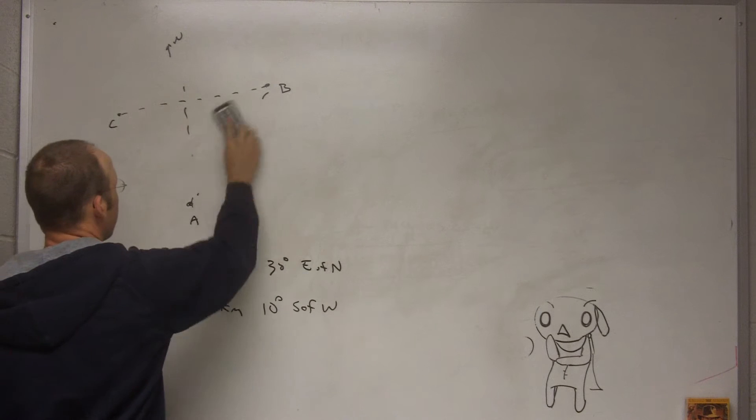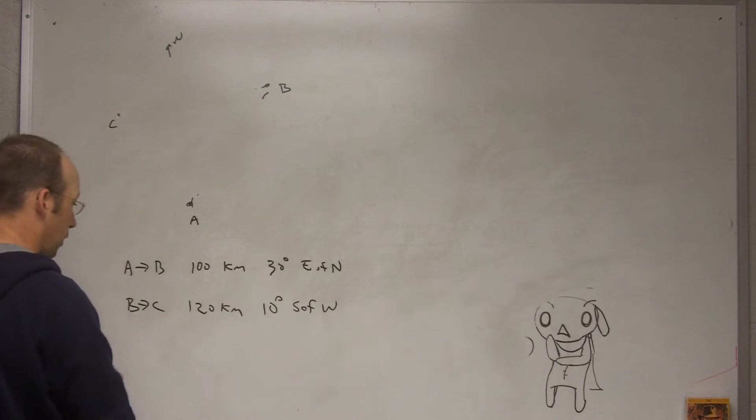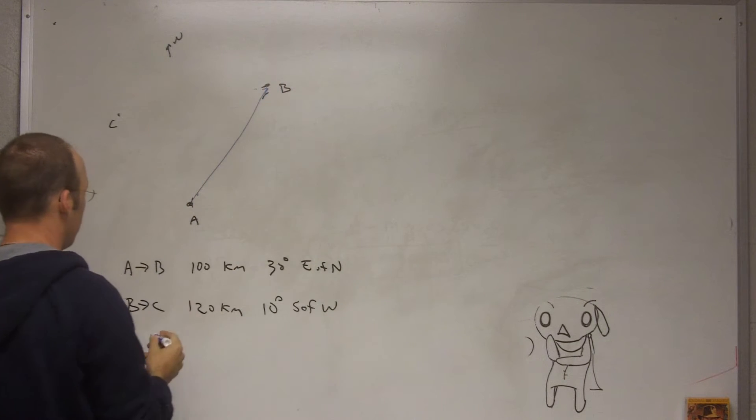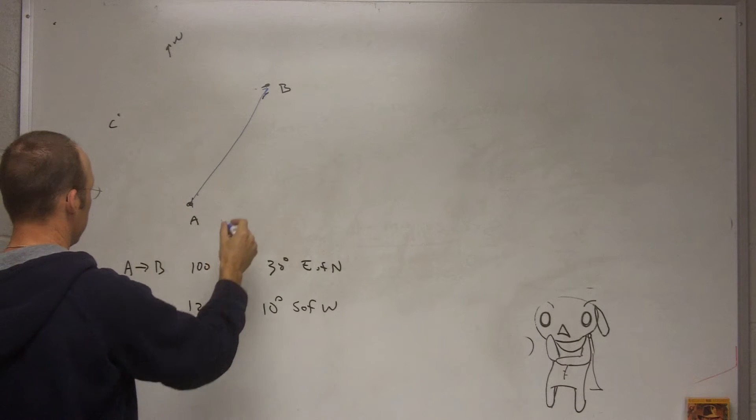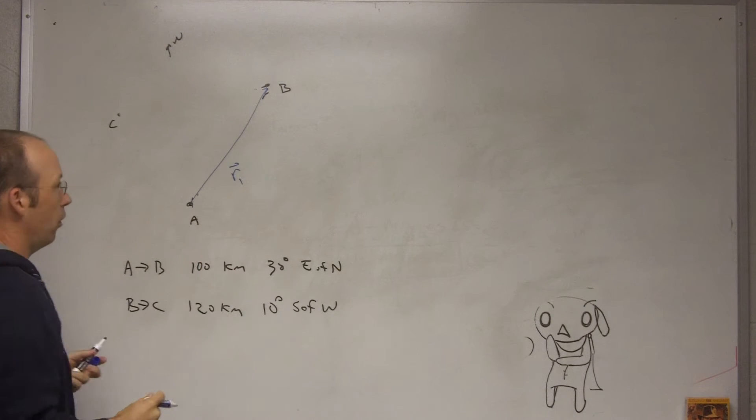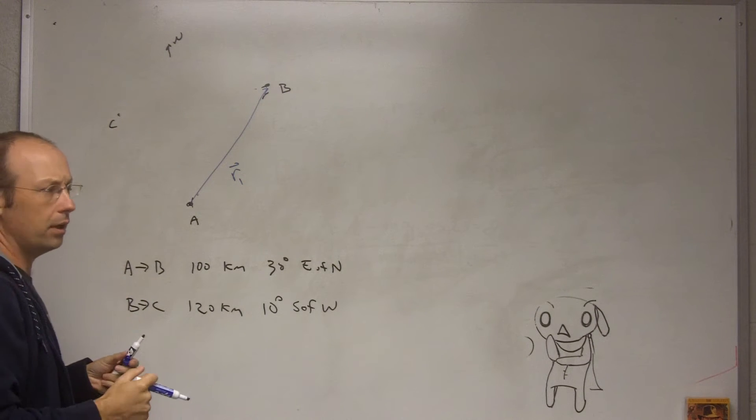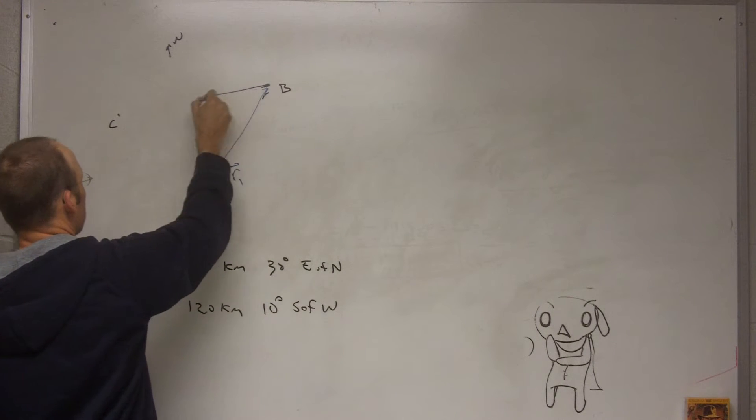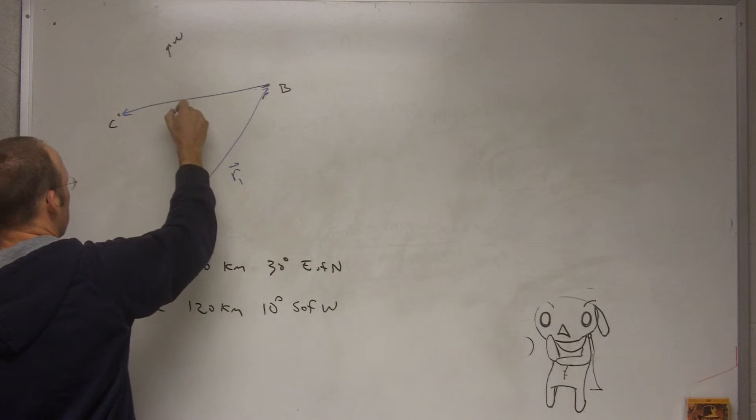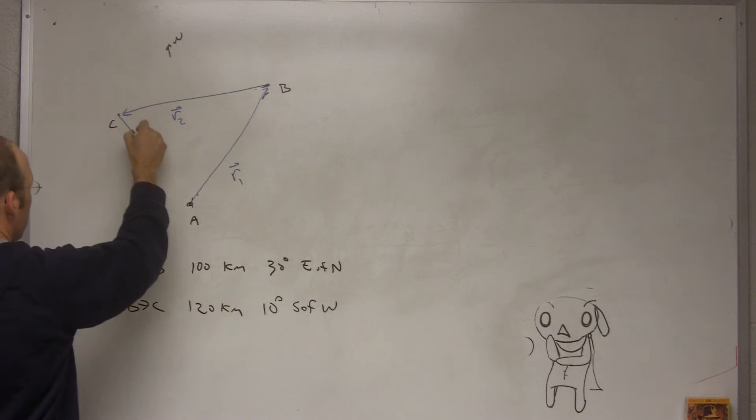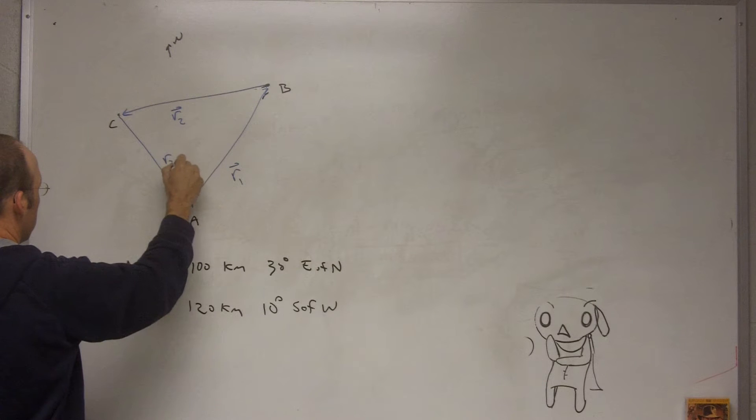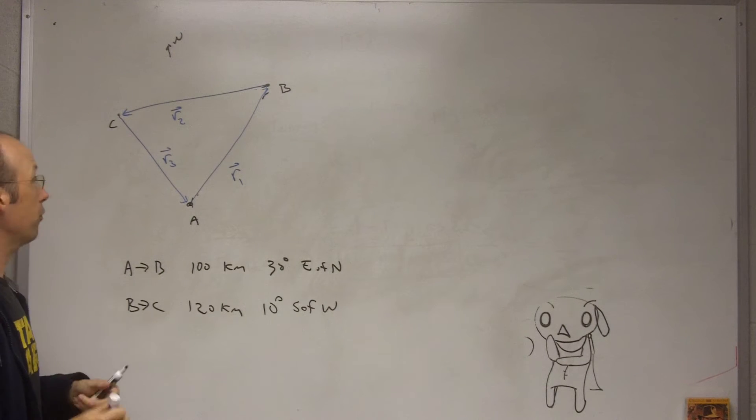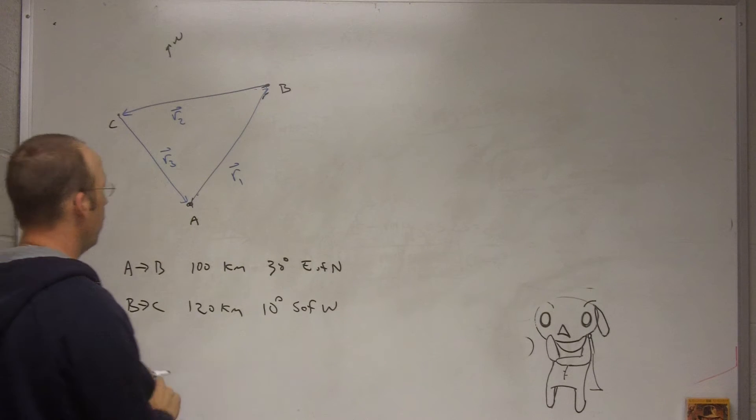Well, this is a vector addition problem because if I look, let me erase these lines here. I have, I'll call this, what should we call that, r1, that's the vector r1, because it's displacement we commonly use r to represent a displacement. And then here's r2, and then this is r3.